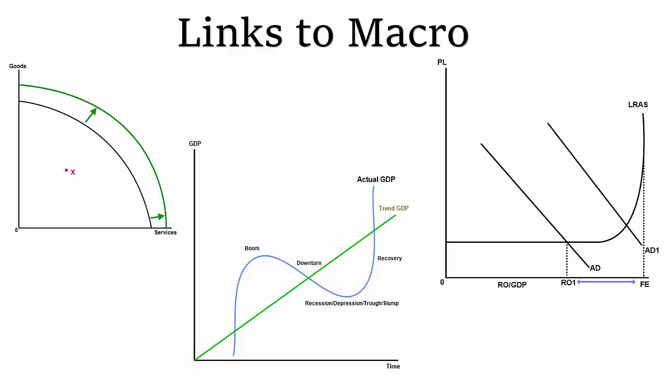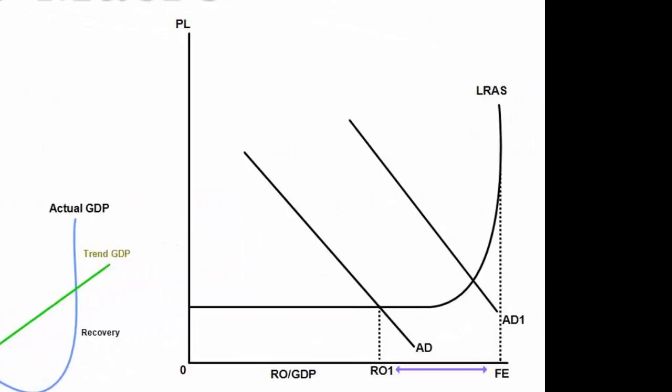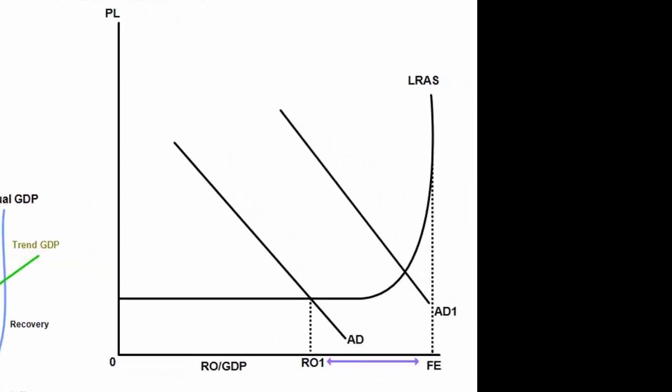You can also link the PPF to a long-run aggregate supply and an aggregate demand graph. Here we've got the Keynesian variety of it. So you'll see that the curve goes flat at the bottom and then curves upwards and then becomes vertical by the very ends. That vertical point where there's a dashed line going down towards Fe, that's down to full employment. So that bit would be the original productive possibility boundary. If you shift your long-run aggregate supply curve out and to the right, you then get growth.